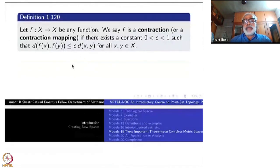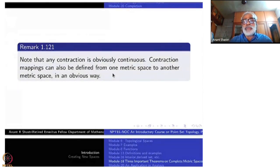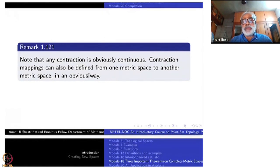Contraction mapping is always continuous because I can control the distance. I want to control distance to be less than epsilon. I can make this one less than epsilon by c. So it is continuous. By the way, this condition, constant c on both sides, we are familiar with. That is equivalence of metrics. So this is not a strange condition at all. This is quite a nice condition. It implies continuity. Contraction mapping can also be defined from one metric space to another metric space.